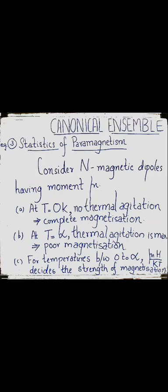Today we are going to learn about the statistics of paramagnetism using canonical ensemble formulation. Before going into the statistics of paramagnetism using canonical ensemble theory, we briefly discuss what is meant by the paramagnetic nature of materials.